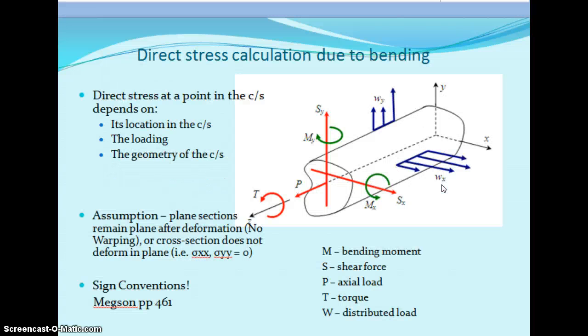The direct stress calculations are due to bending. To calculate direct stress, we first need to find out the bending moment. Bending moment means load multiplied by the perpendicular distance, and bending moment can have many directions — x, y, z. To identify the bending moment direction, if the moment direction is x, then the load and displacement should be in the other direction.